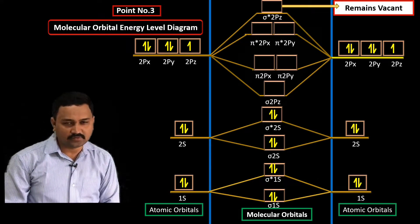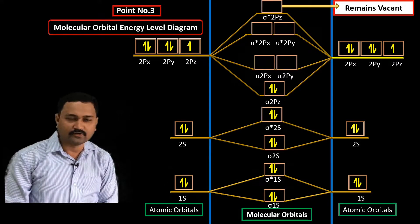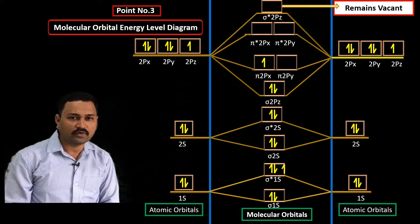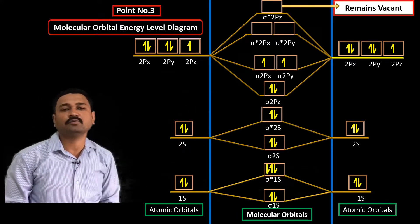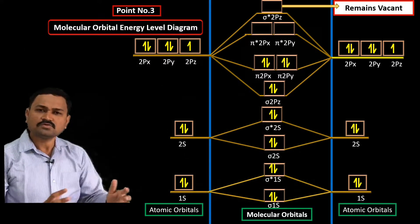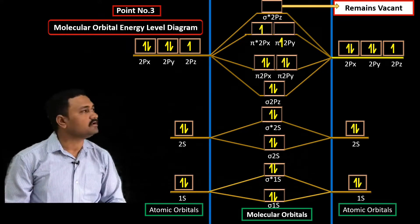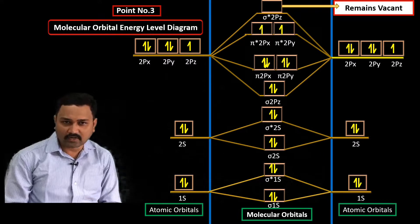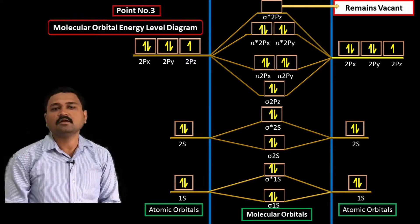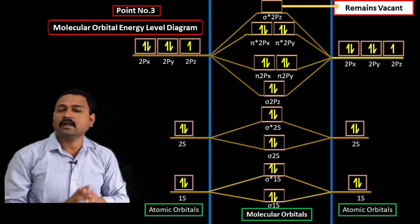The remaining ten electrons are distributed as follows: the first two enter the σ2pz bonding molecular orbital, then the next four electrons enter the π2px and π2py bonding molecular orbitals. That accounts for six electrons, leaving four remaining. The last four electrons enter the π*2px and π*2py antibonding molecular orbitals, completing the distribution of all 18 electrons.